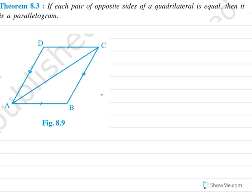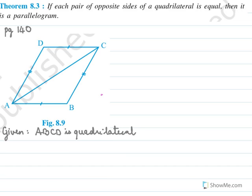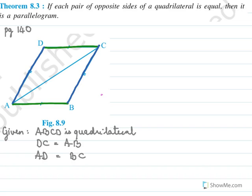Theorem 8.3, page 140: If each pair of opposite sides of a quadrilateral is equal, then it is a parallelogram. So given ABCD is a quadrilateral — not a parallelogram, just an ordinary quadrilateral — but the opposite sides are equal. So they have given DC equals AB and AD equals BC.